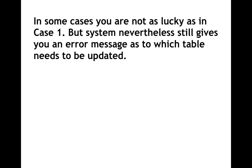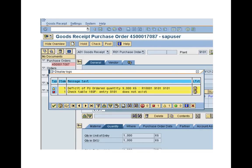From the error message, we concluded that the PRD configuration or OBYC setting was missing, and we did the configuration. That's one scenario. Another situation — as I mentioned — sometimes you are not as lucky as in scenario one. In this case the system gives you a technical message, a table-related message rather than a functional message. You can see here the error: 'Table 169P entry for company code 9101 does not exist.'